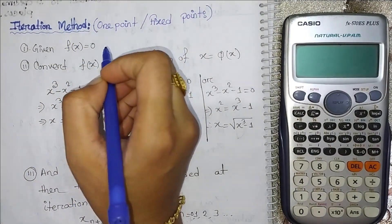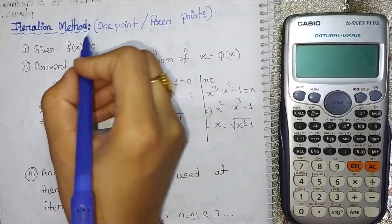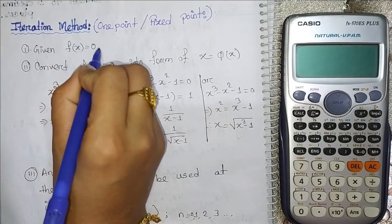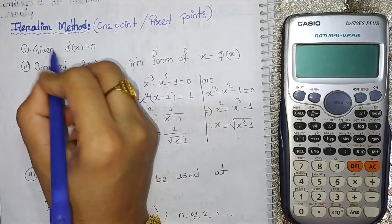First, let us complete the necessary setup. For the iteration method, we are given a function f(x) = 0, and we need to rearrange it into the form x = phi(x).